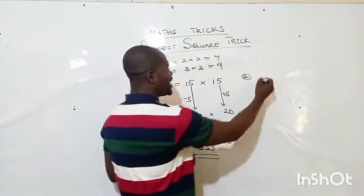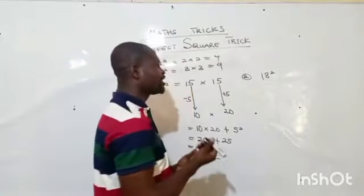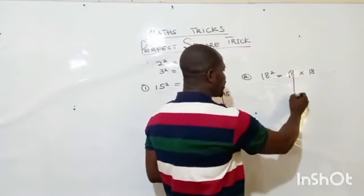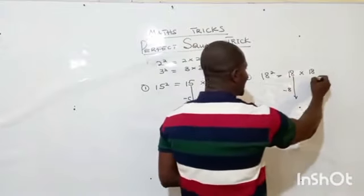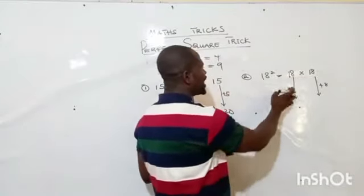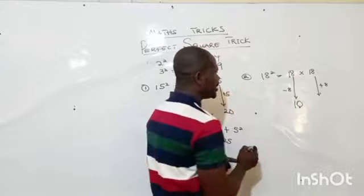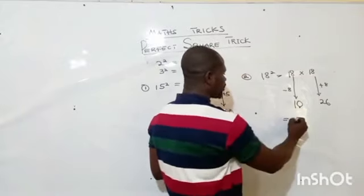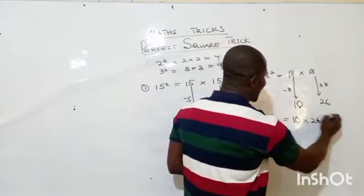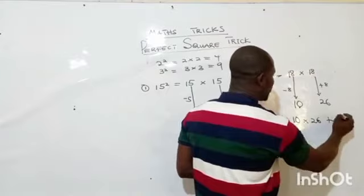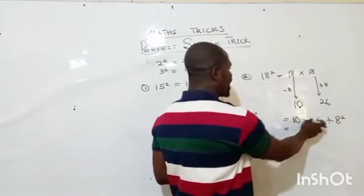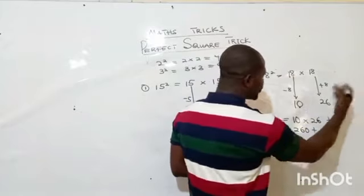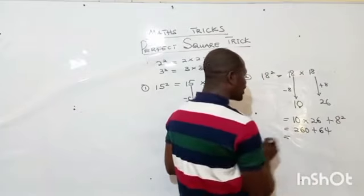Let's add another one: 18 squared, which is the same as 18 times 18. For the first number you subtract 8 from it, and for the second number you add 8 to it. So 18 minus 8 gives you 10, and 18 plus 8 gives you 26. Now you have 10 times 26, plus the square of 8. So 10 times 26 gives us 260, plus 8 squared which is 64.